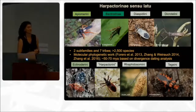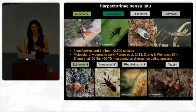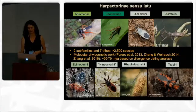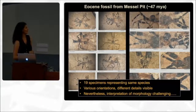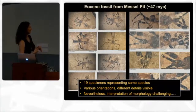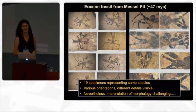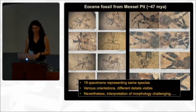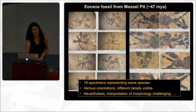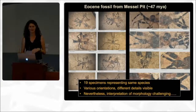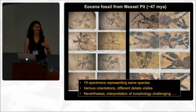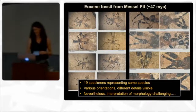The divergence of that group from its relatives was around 50–70 million years ago, with quite cool morphological diversity. This is what the fossil looks like — the mesopid fossil, Eocene, 47 million years ago. We were really lucky to have 19 specimens total representing the same species, which is very unusual for fossils. They come in various orientations and different details are visible in different specimens. Nevertheless, the interpretation of morphology is really challenging. Finding the right characters that you can easily document has been really, really difficult.